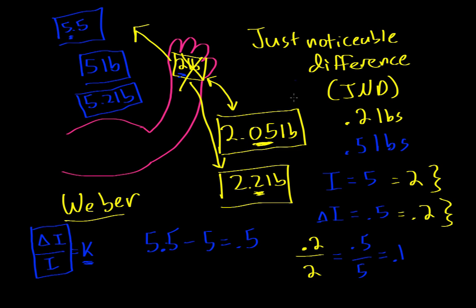Weber's Law applies to auditory stimuli as well. In a quiet room, you can whisper and someone next to you will hear you. But at a rock concert, you'd have to yell at the top of your lungs for someone to hear you. That's because the background intensity differs dramatically, and the ΔI — whether you're whispering or yelling — changes accordingly. That's what Weber's Law is saying.